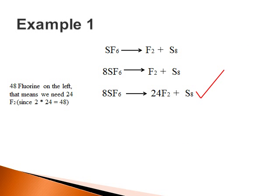Let's look at an example. In this example, we have a decomposition of sulfur hexafluoride, SF6, into fluoride, F2, and sulfur, S8. This equation is not balanced as we see that there are more sulfur in the reactant side than the product side. So let's balance this out.